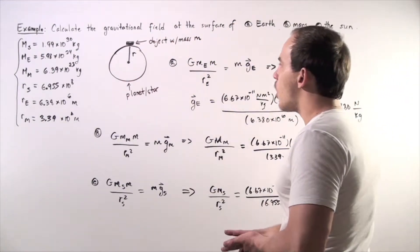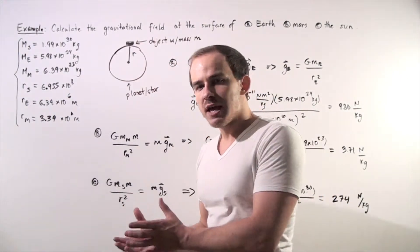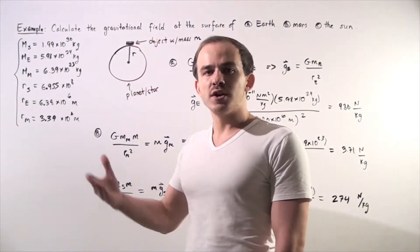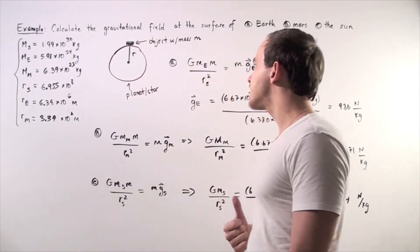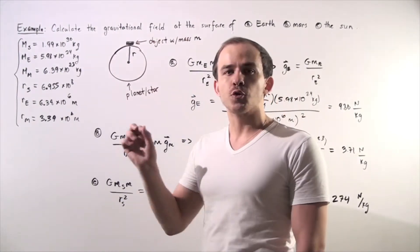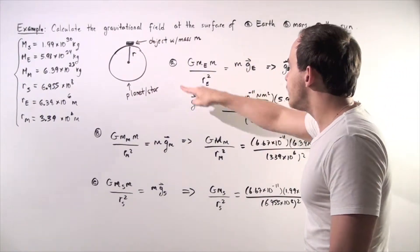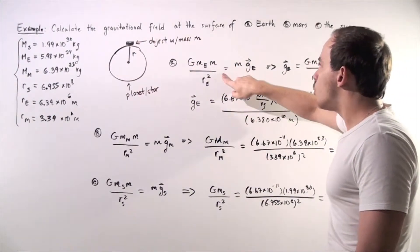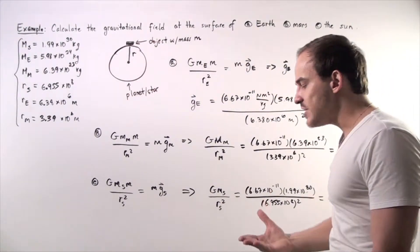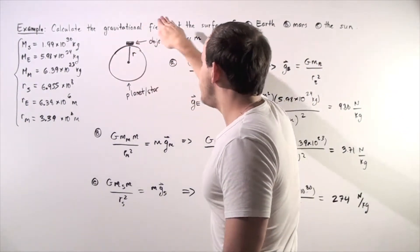Let's begin with part A. Because we're trying to determine our acceleration, we use Newton's second law of motion: force equals mass times acceleration. The only force acting on the object is the force of gravity — the gravitational force of the Earth — which we equate to mass times acceleration, where acceleration is the gravitational constant g of the Earth. This value is our gravitational field.